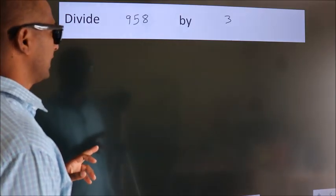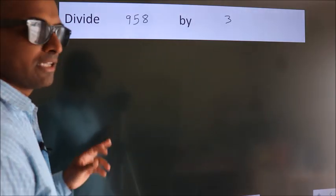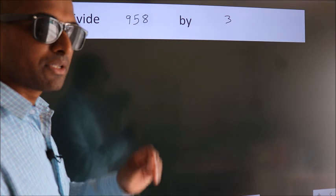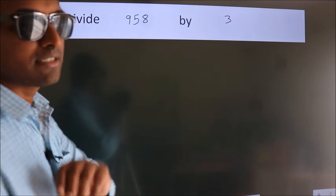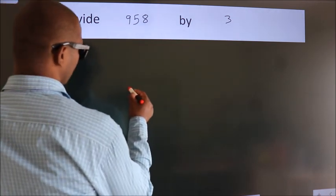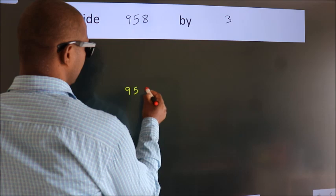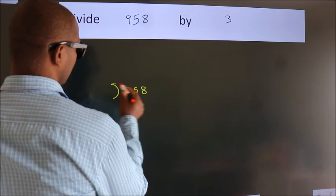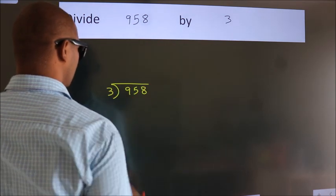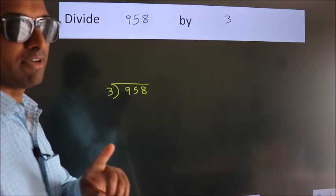Divide 958 by 3. To do this division, we should frame it in this way. 958 here, 3 here. This is your step 1.